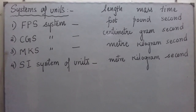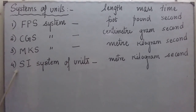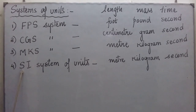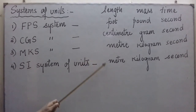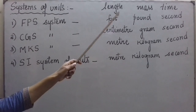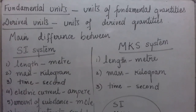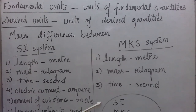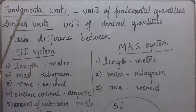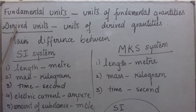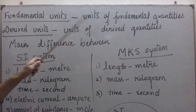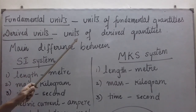This SI system of units is the most important and most commonly used system of units, also called the International System of Units. In this system, meter is the unit of length, kilogram is the unit of mass, and second is the unit of time. Before discussing these systems further, let us see the definition of fundamental units and derived units. Fundamental units are the units of fundamental quantities, and derived units are the units of derived physical quantities.